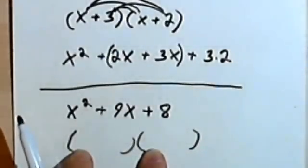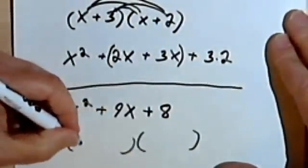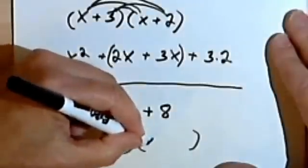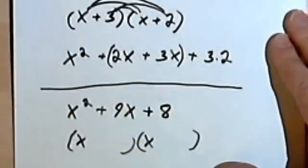Well, I must have multiplied an x times an x to get an x-squared. So I can start filling in my parentheses by putting in an x and an x.